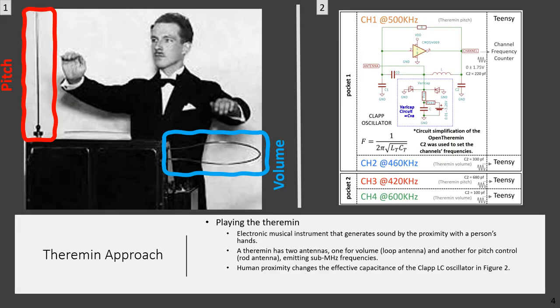Human proximity changes the effective capacitance of the CLAP-LC oscillator in figure 2, affecting its frequency. A theremin has two antennas, one for volume loop antenna and another for pitch control rod antenna, emitting sub-MHz frequencies. As the player moves inside the antenna's range, volume and pitch can be controlled by his or her hands position. We substitute the metal rod with soft wires and integrate them inside clothing.